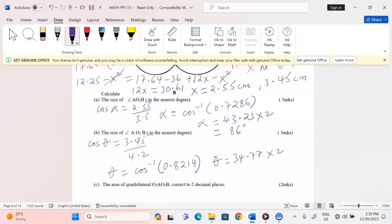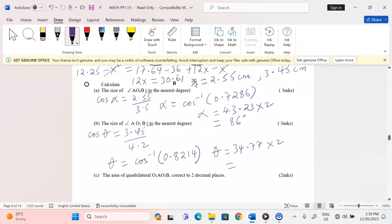When I find the cos inverse of 0.8214, I'm going to get 34.77. Then we multiply this by 2 to get the whole angle, so by 2 I'm going to get 69.5, which becomes exactly 70 degrees because I'm told to the nearest degree.